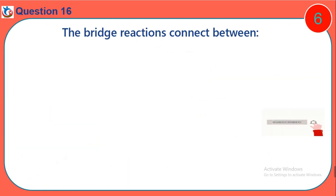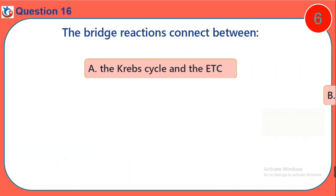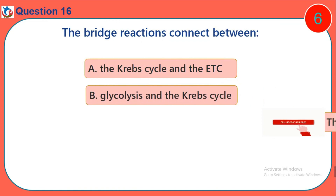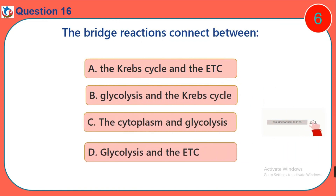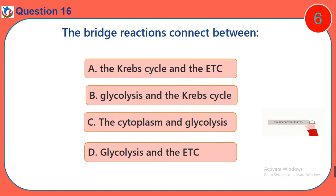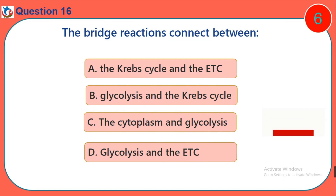Question 16. The bridge reactions connect between: A. The Krebs cycle and the electron transport chain. B. Glycolysis and the Krebs cycle. C. The cytoplasm and glycolysis. D. Glycolysis and the electron transport chain.